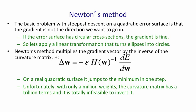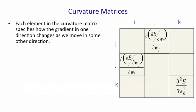The problem is that even if we only have a million weights in our neural network, the curvature matrix — the Hessian — will have a trillion terms. It's completely infeasible to invert it.